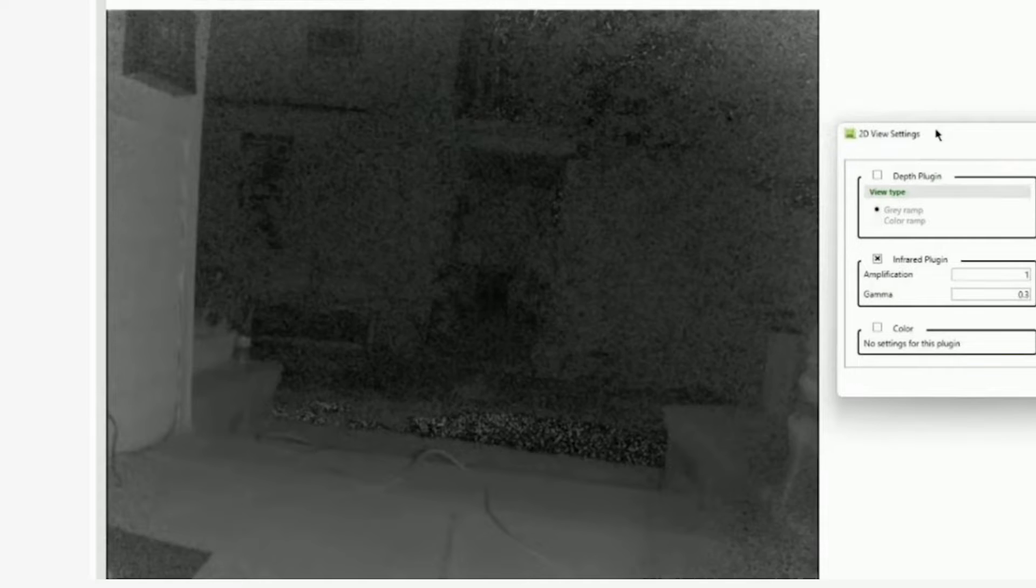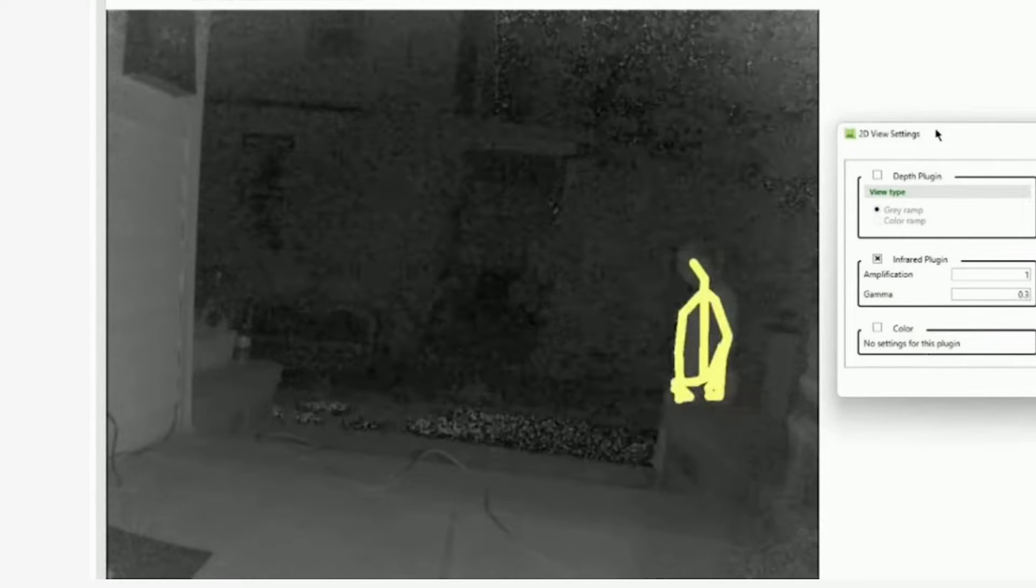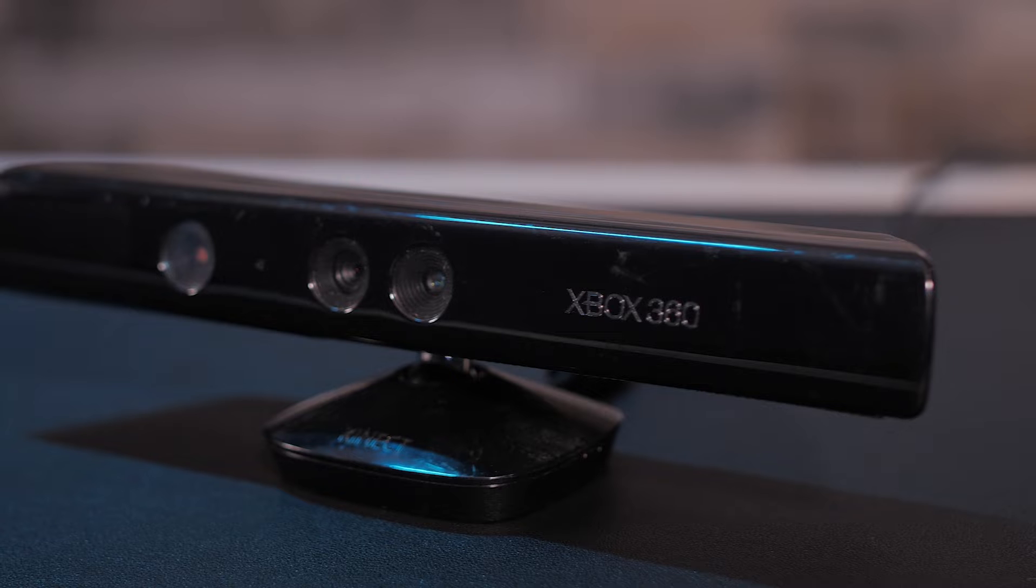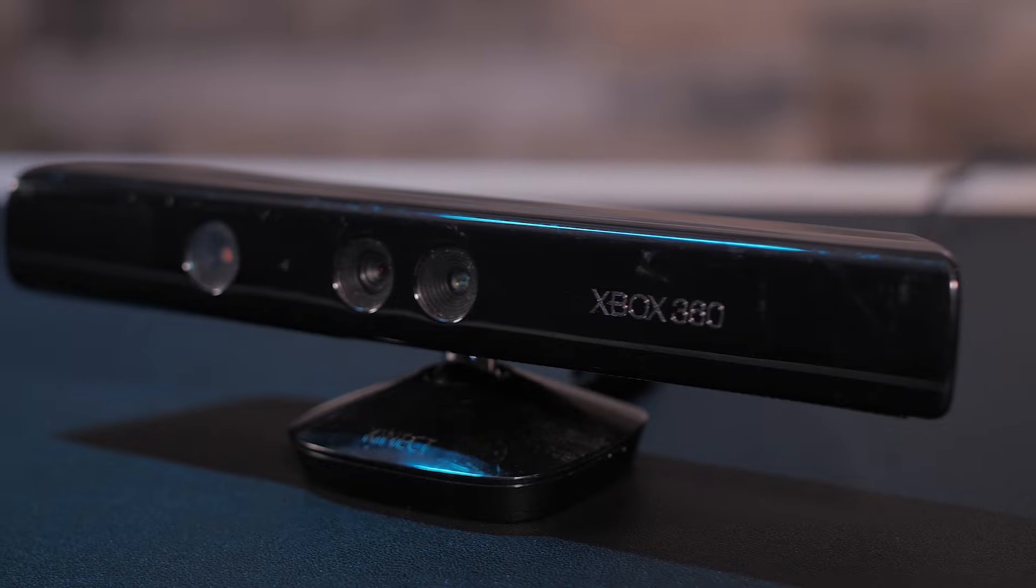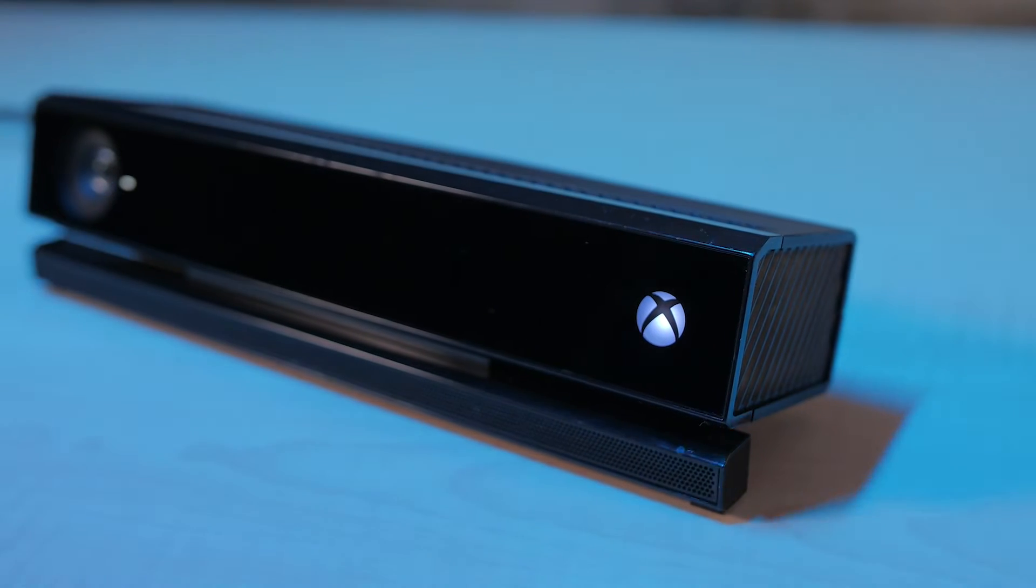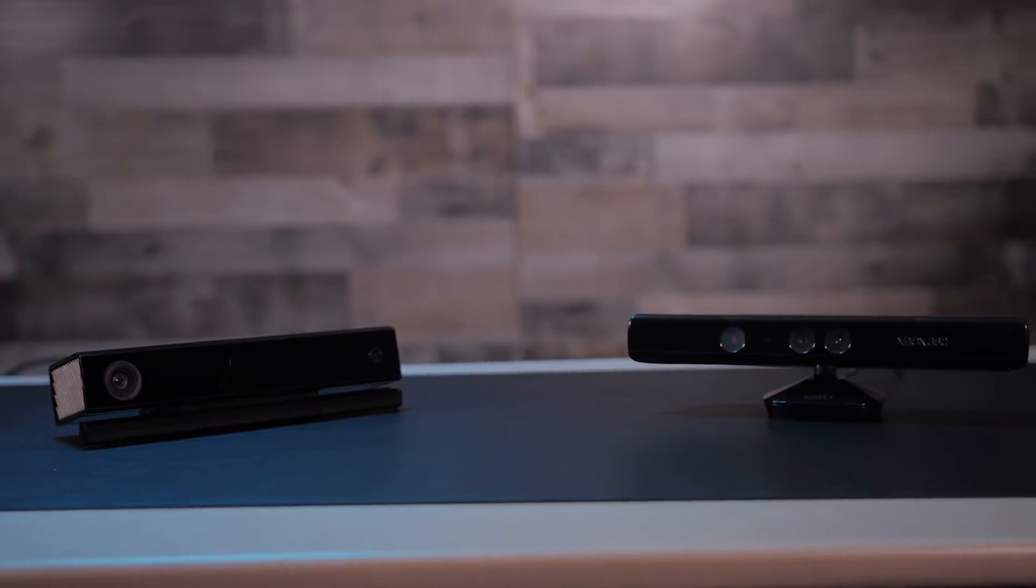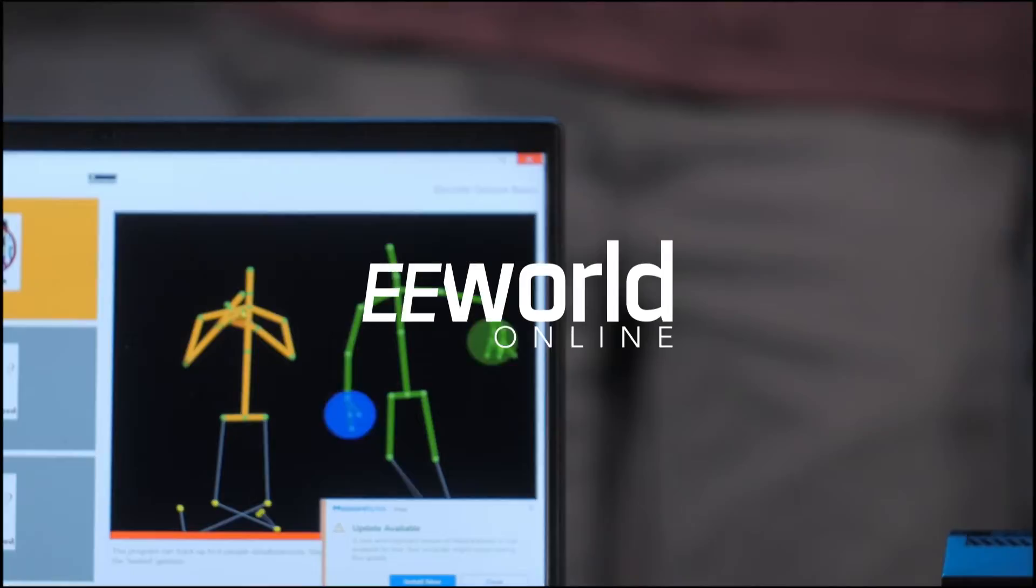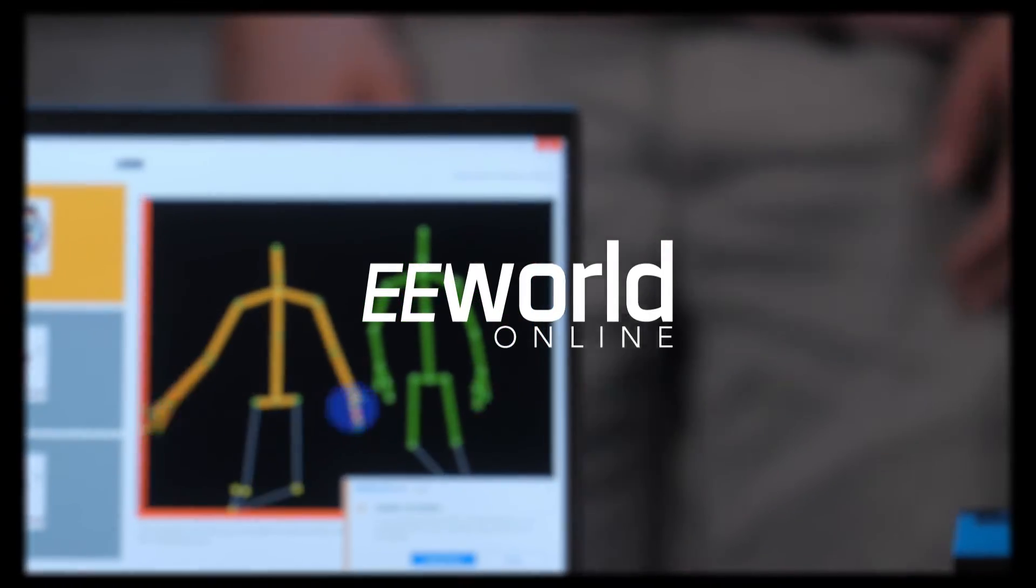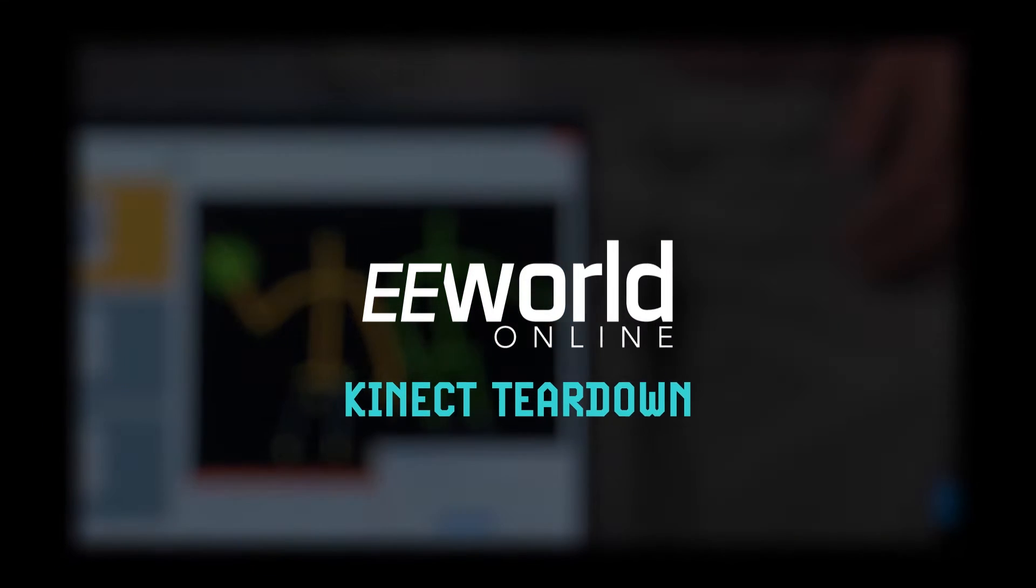And it turns out that only version 1 of the Kinect, launched in 2010, will generate what some have claimed are ghostly figures. In this teardown, we're going to look at the Kinect version 2 to explain why the ghostly figures you see on some YouTube videos only appear when using the initial version of the Kinect and generally not when you use a later model.